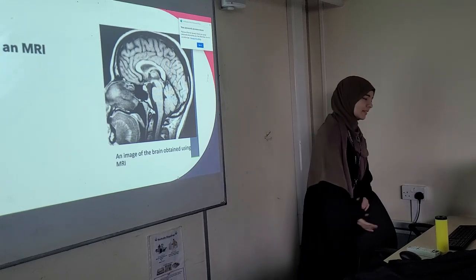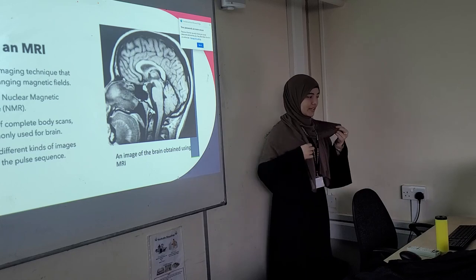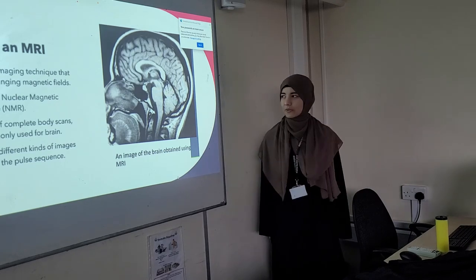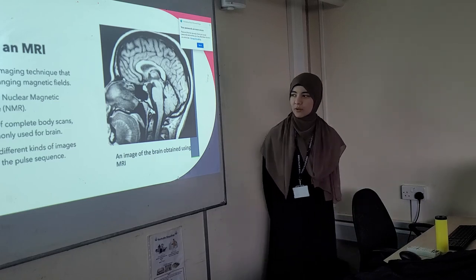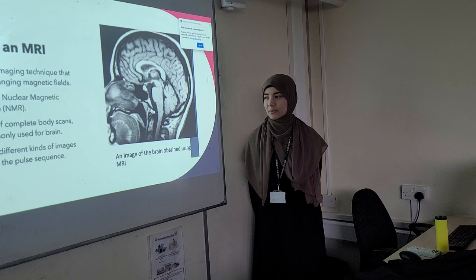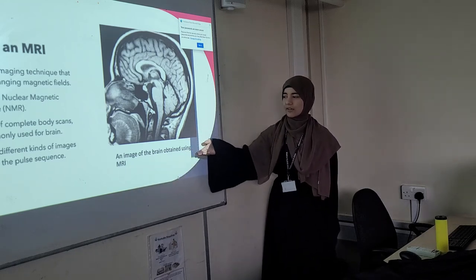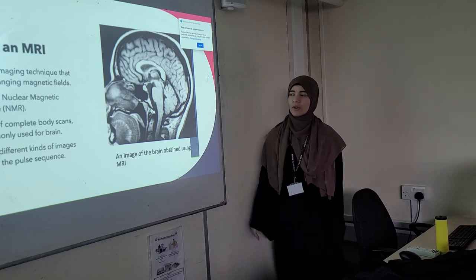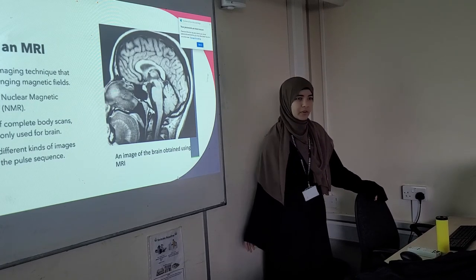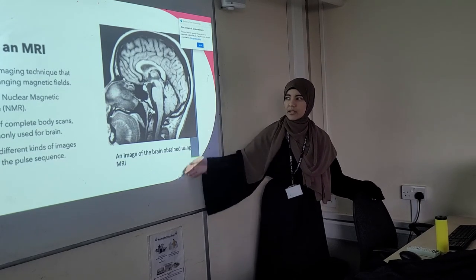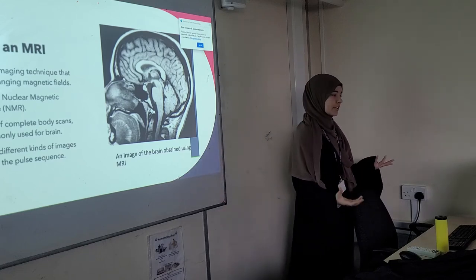So, what is an MRI? An MRI is a medical imaging technique that records changing magnetic fields. It's also called nuclear magnetic resonance, capable of complete body scans but commonly used for the brain. It can give different kinds of images based on the pulse sequence. Here's an example of an image of the brain obtained by MRI. An X-ray can only give us so much — an MRI gives us the intricate details of the brain and muscles, which is why we use it for diagnosis.